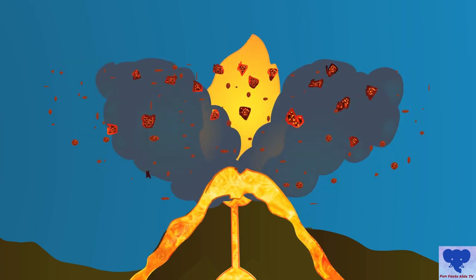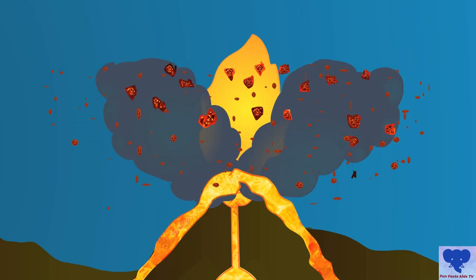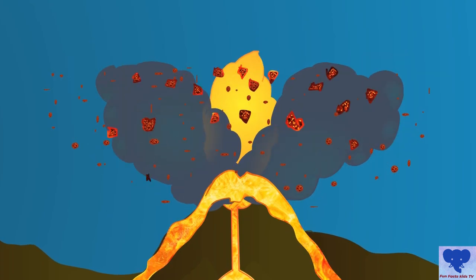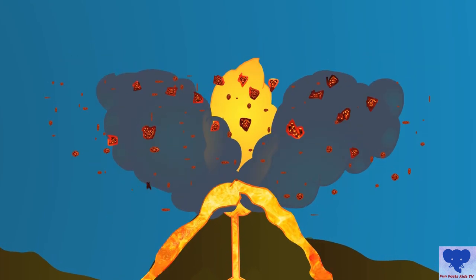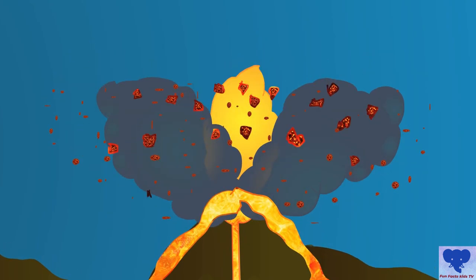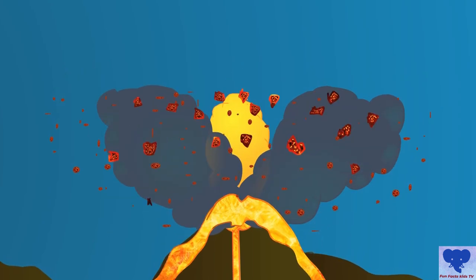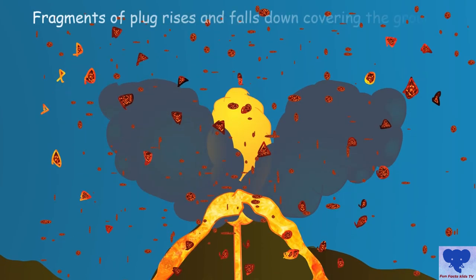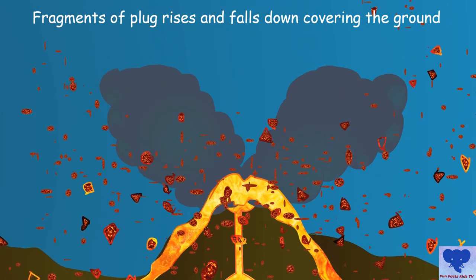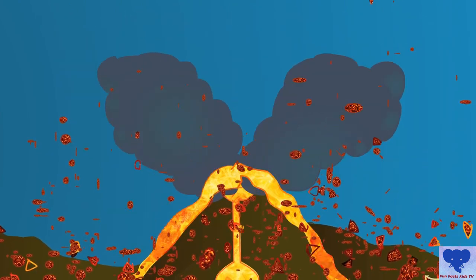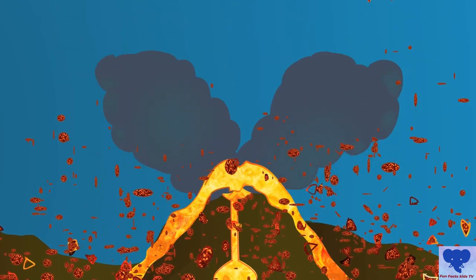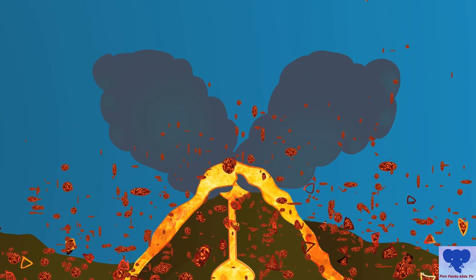The lava streams down the sides of the volcano. The fragments of the plug rise up high in the clouds. The explosion can also fire out ash and cinder that fall like rain, covering the ground in a thick, hot, choking blanket.